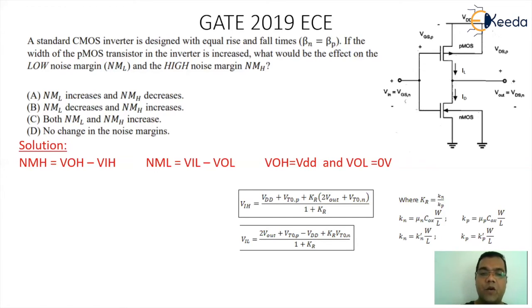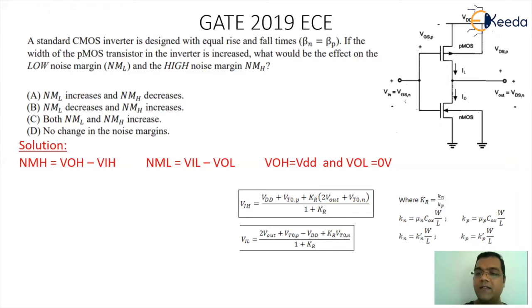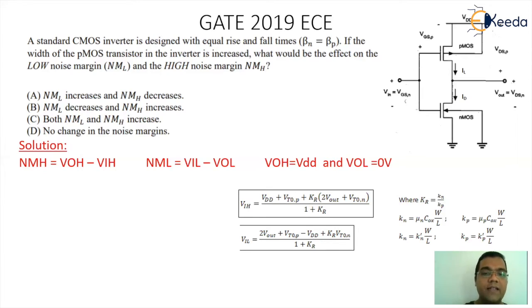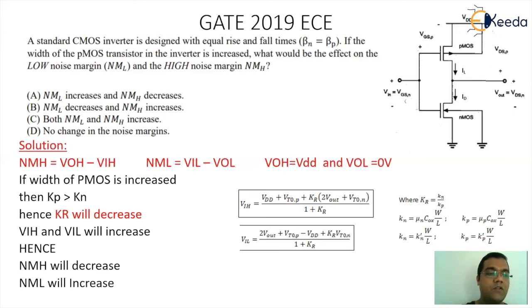Now let's understand the impact on VIL. Noise margin low is VIL minus VOL, and since VOL is zero, noise margin low equals VIL. Same logic applies: width increases → KP increases → KR decreases → in the VIL formula, if the denominator is reducing, VIL is increasing. And if VIL increases, noise margin low will increase. So to summarize: noise margin low has increased and noise margin high has decreased.